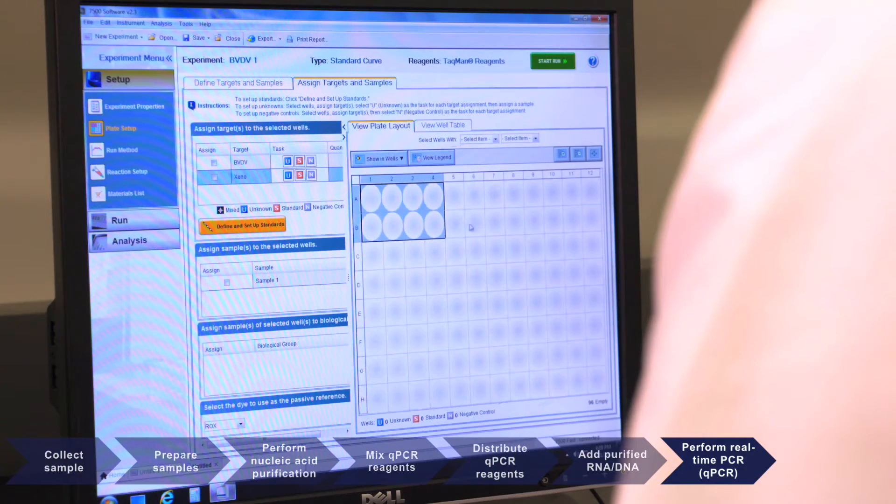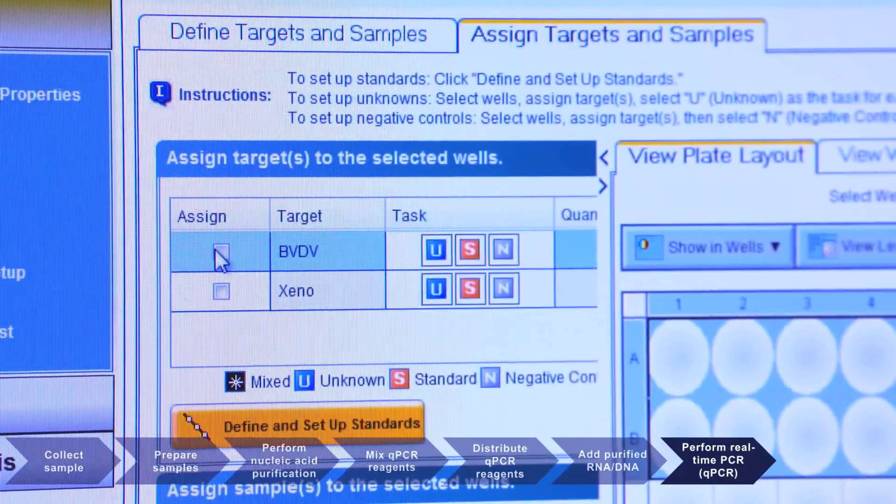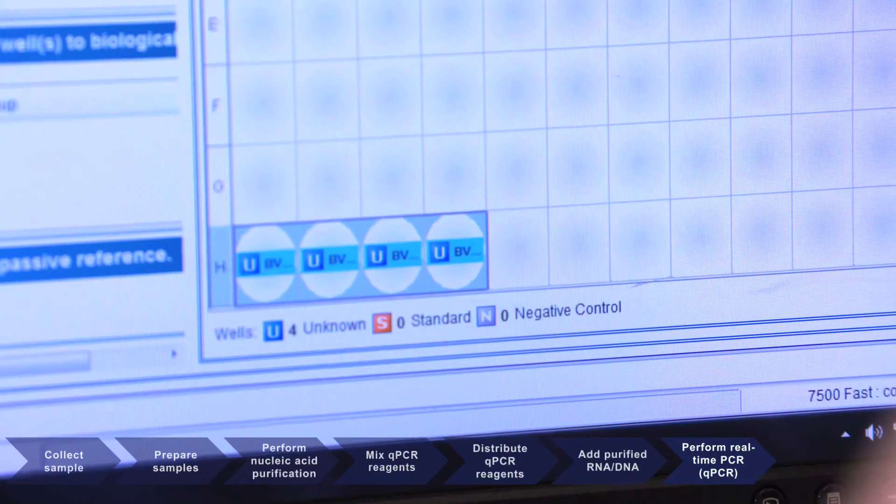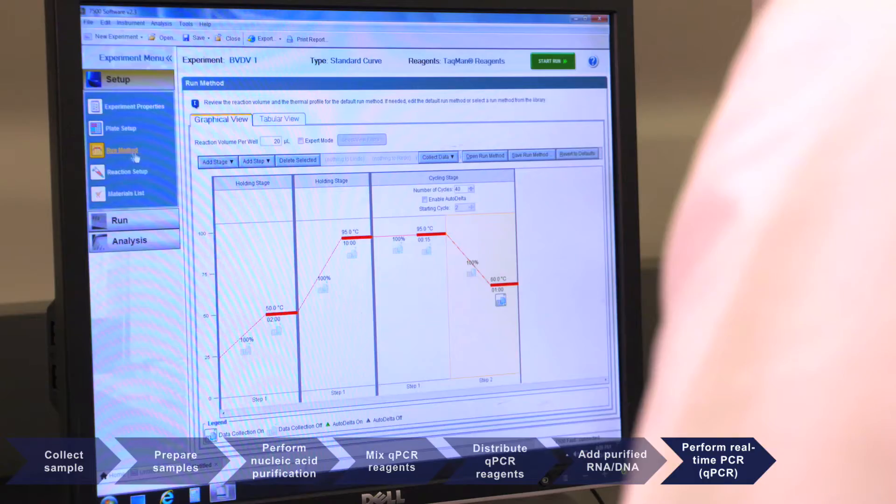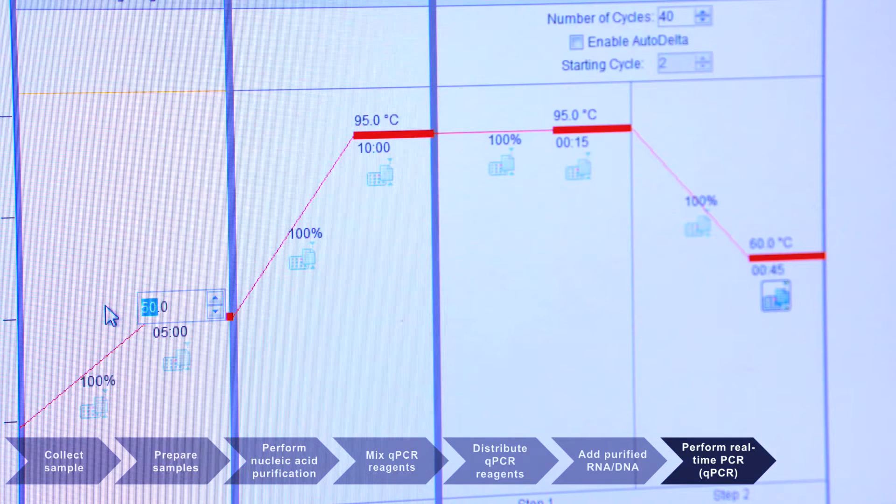Program the real-time PCR instrument by first labeling sample wells and then setting the thermal cycling conditions. Set the number of repetitions, temperature, and time necessary for each stage of the run.